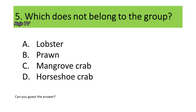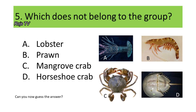If you are unfamiliar with these organisms, here are the photos — A. Lobster, B. Prawn, C. Mangrove Crab, D. Horseshoe Crab. Can you now identify the answer? If not, here is another hint.